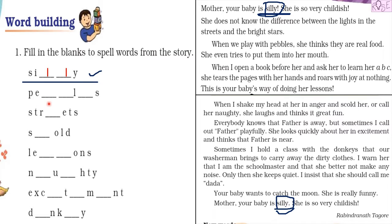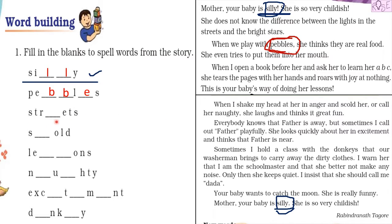The next word starts with 'p', then has 'e', then 'e', then two other letters, then 'l', and ends with 's'. Which word is this? Here's a hint: this word means small stones. Yes, you are correct — this word is 'pebbles'. Let us write the remaining letters: P, E, B, B — then 'l' which is already given — then 'e', then 's'. So P-E-B-B-L-E-S makes 'pebbles'.